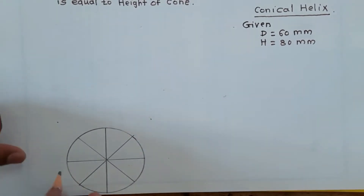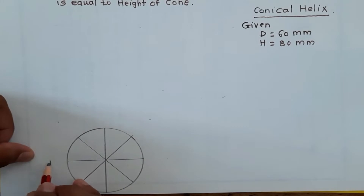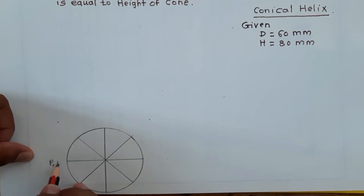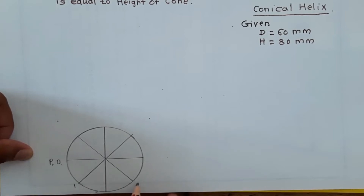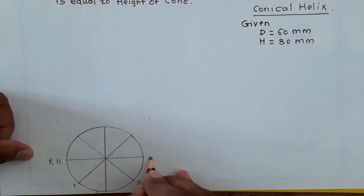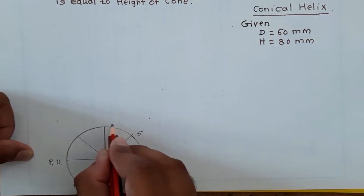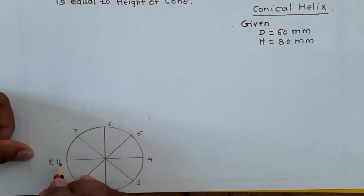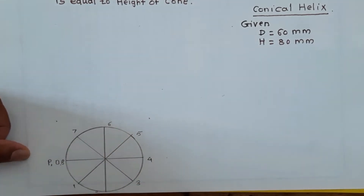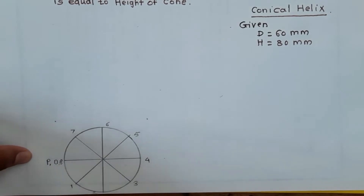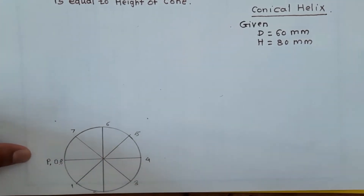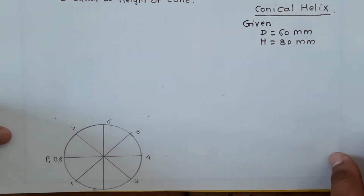As per procedure I will give naming to all these divided sectors. This will be P or zero, then one, two, three, four, five, six, seven, and last is eight. So the circle is divided into eight parts as per procedure.